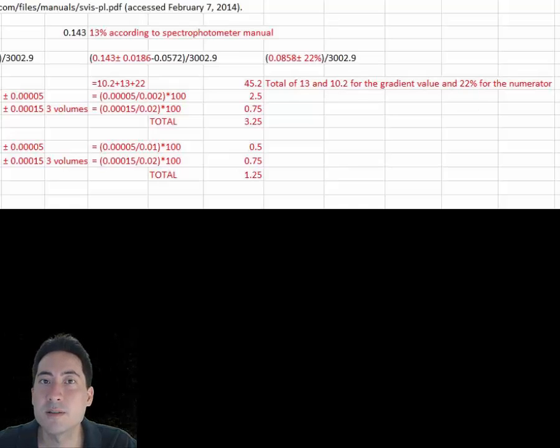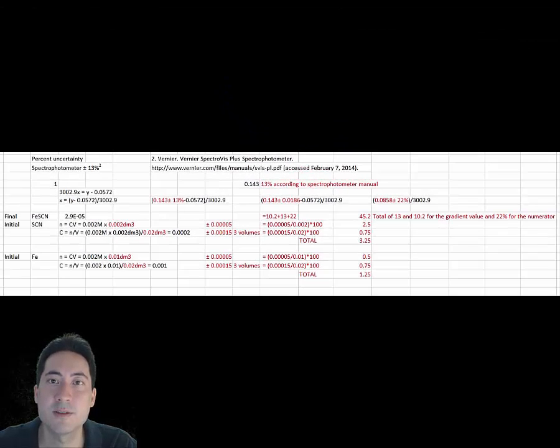Add the numerator uncertainty of 22% and the denominator uncertainty of 23.2%, and you have a 45.2% uncertainty for the final iron thiocyanate concentration.